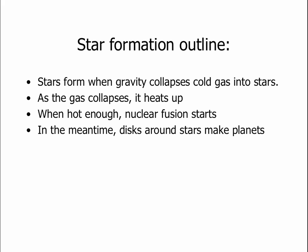Let's begin with a basic outline of how stars form, and then we'll flesh it out. A star forms when gravity begins to pull cold gas inward — we call it a collapse into stars. As this gas collapses inward, it begins to heat up, and when it's finally hot enough, nuclear fusion starts, and then we have a star. In the meantime, discs around the stars can begin to make planets, and we now know that nearly every single star likely has planets around it.